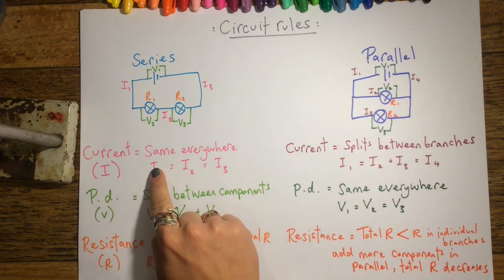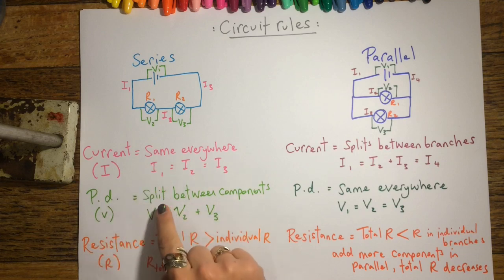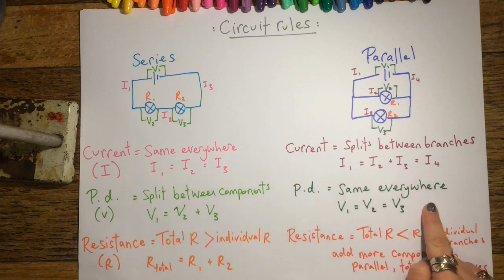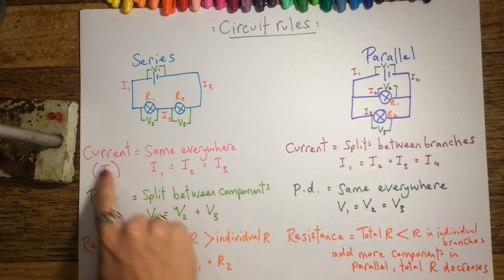For potential difference in a series circuit, it's the opposite of what current was in a series circuit. And potential difference in a parallel circuit is the opposite of the potential difference in a series circuit.